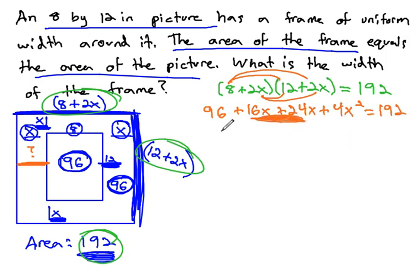Combining like terms in the middle, also putting it in order, 4x squared, plus 40x, plus 96, equals 192.